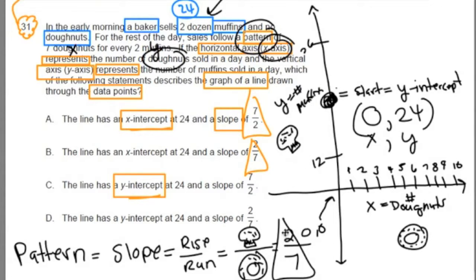This is our slope. Meaning, from this point here, we're rising—the baker is selling two muffins—and they're running seven doughnuts. Meaning they're selling another seven doughnuts. So that's one, two, three, four, five, six, seven. So what does that mean?